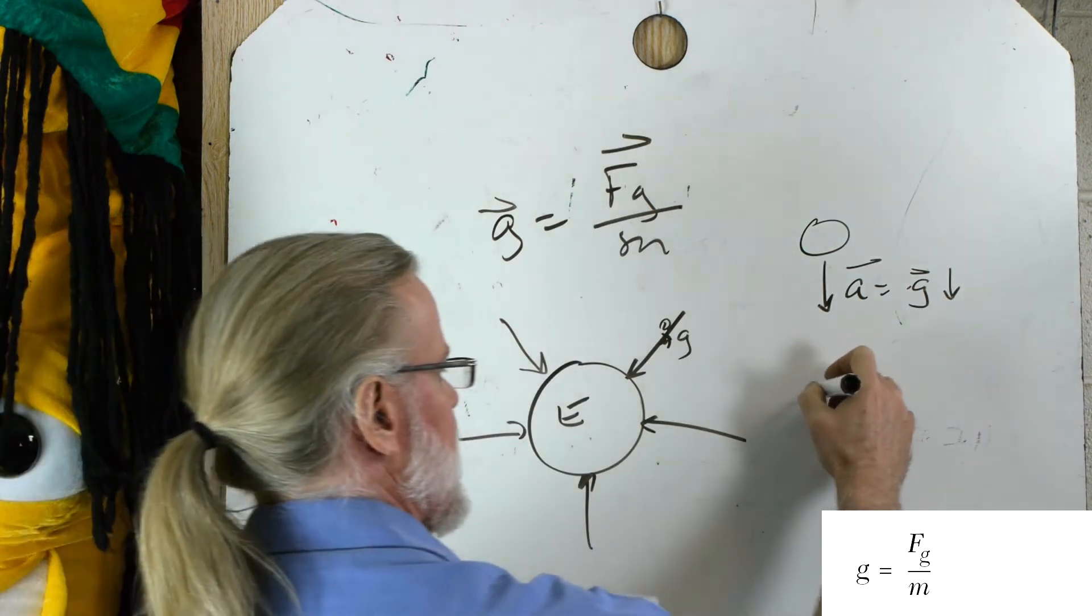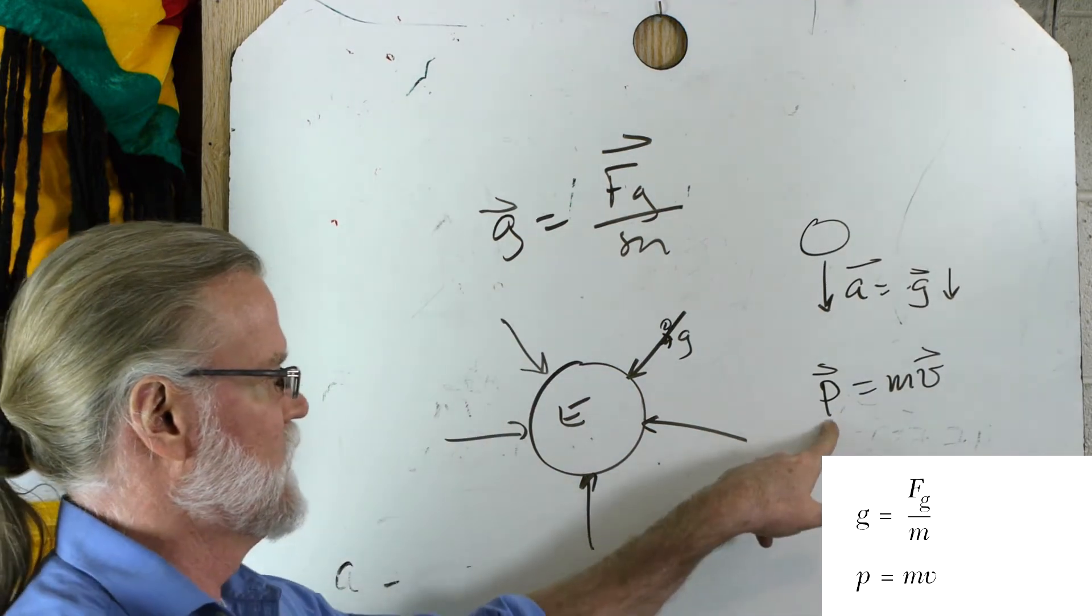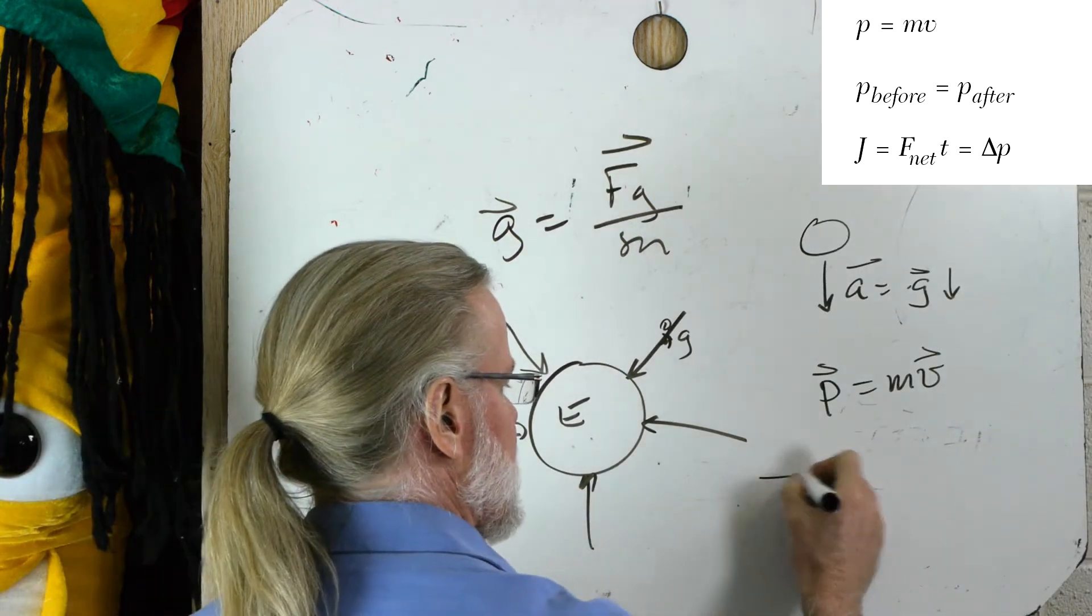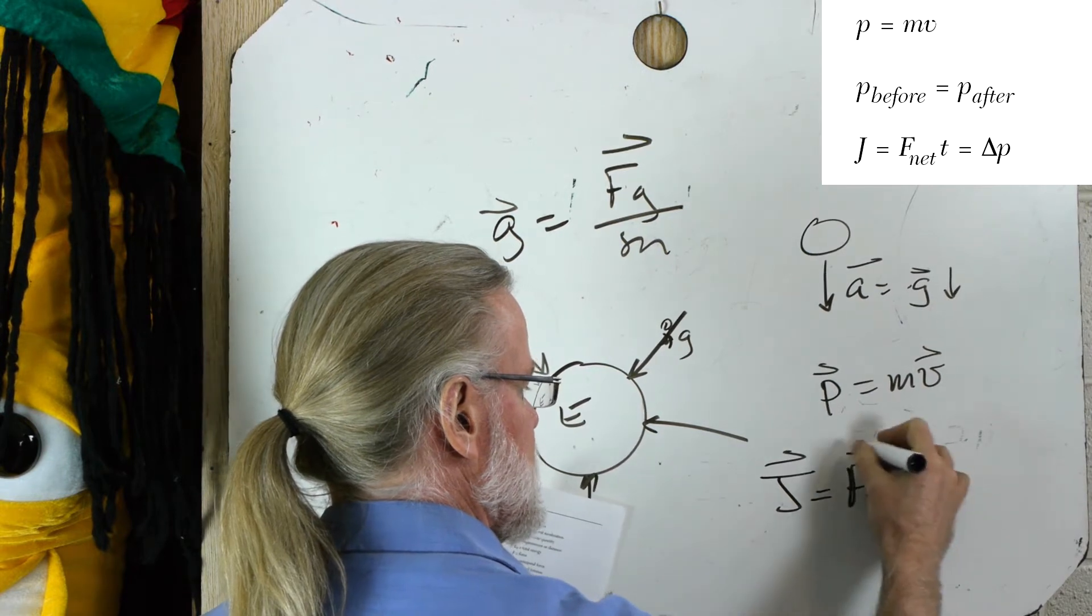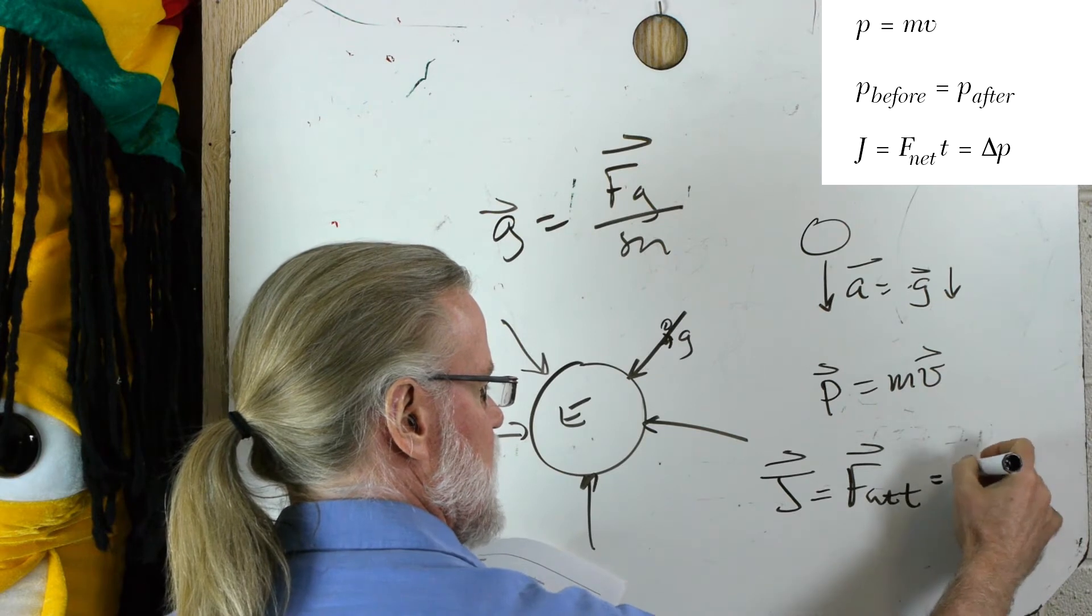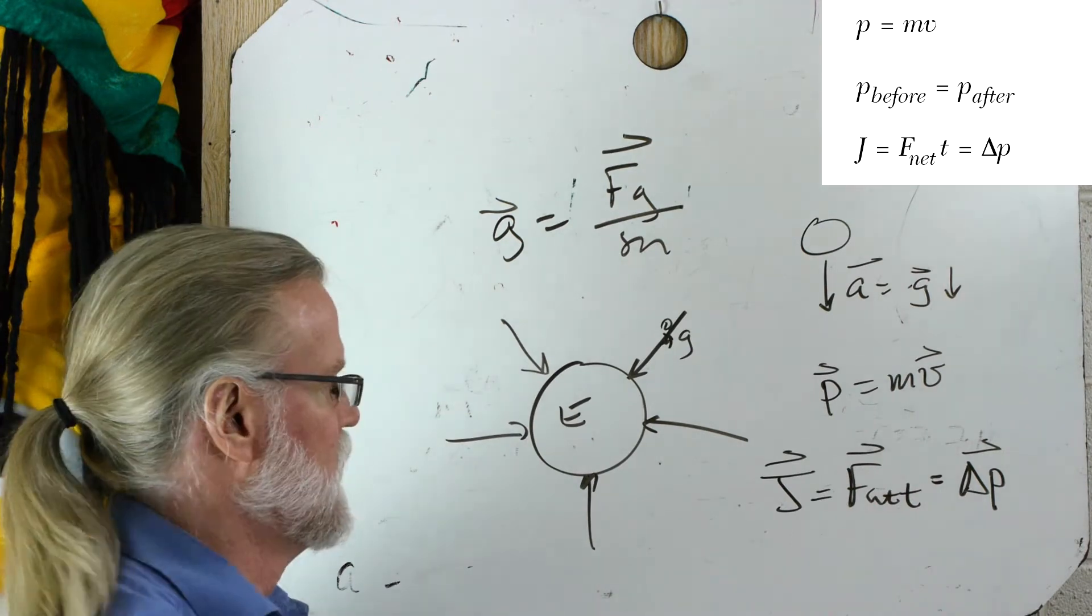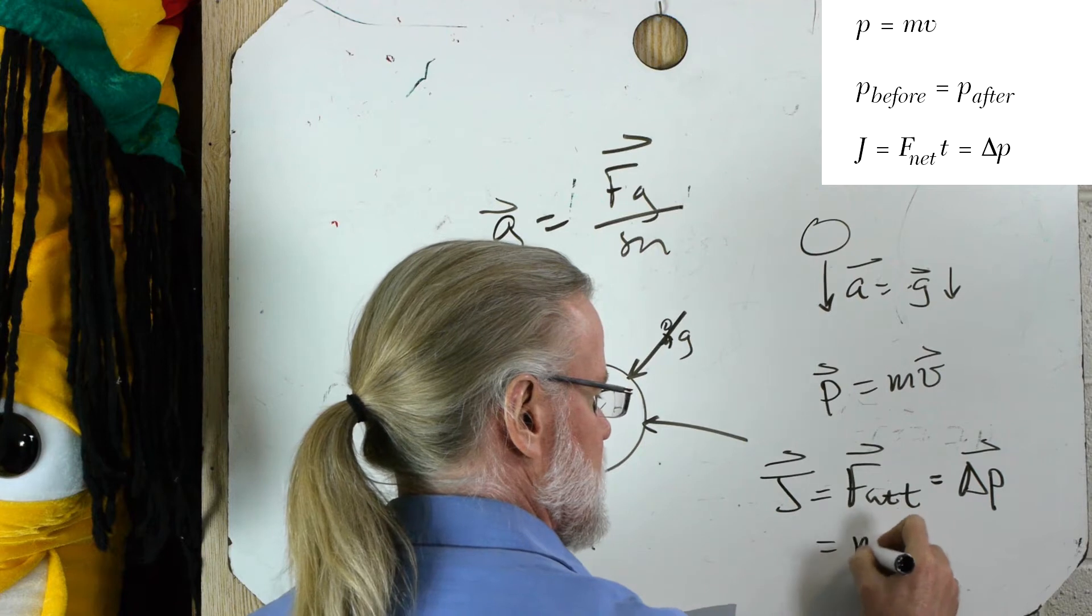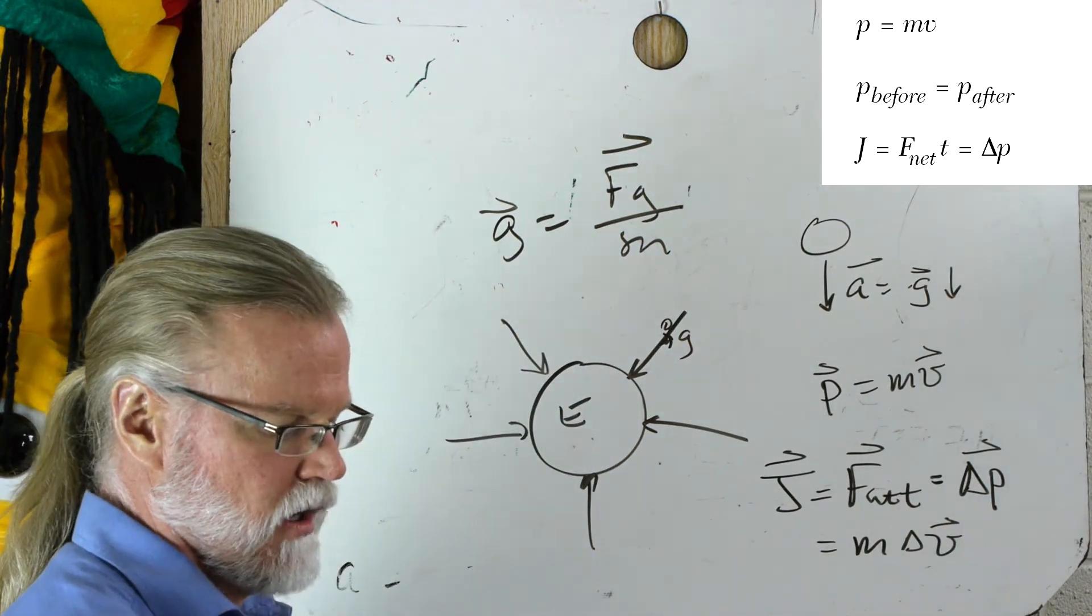Next, we had momentum. Momentum is certainly a vector. Momentum is a vector, and it's in the direction of the object's velocity. And then we also had impulse equals F net times T. That's the definition of it. And the impulse is in the direction of the net force, and they are both in the direction of the change in momentum of an object, which is in the same direction as the object's change in velocity. All vectors.